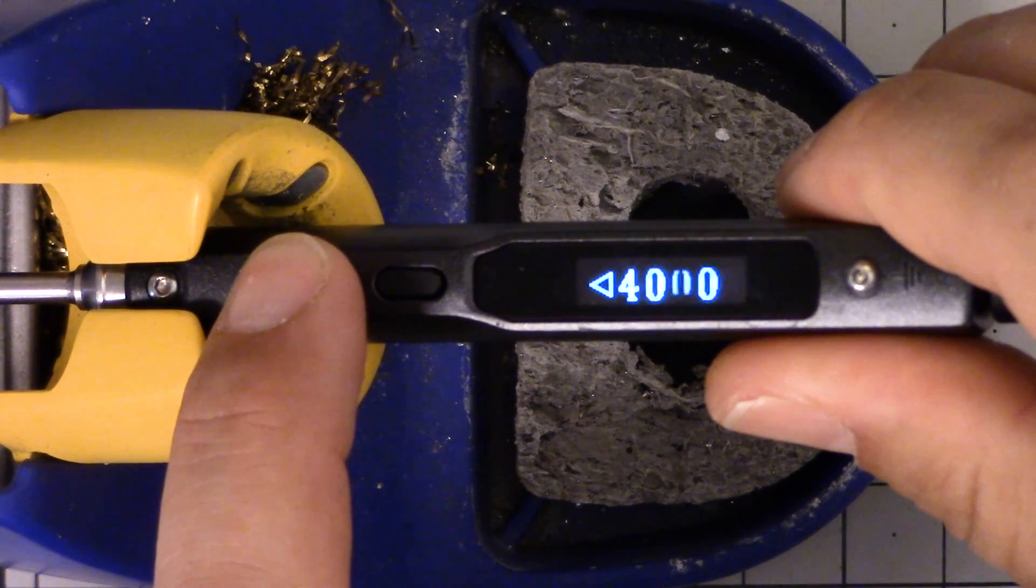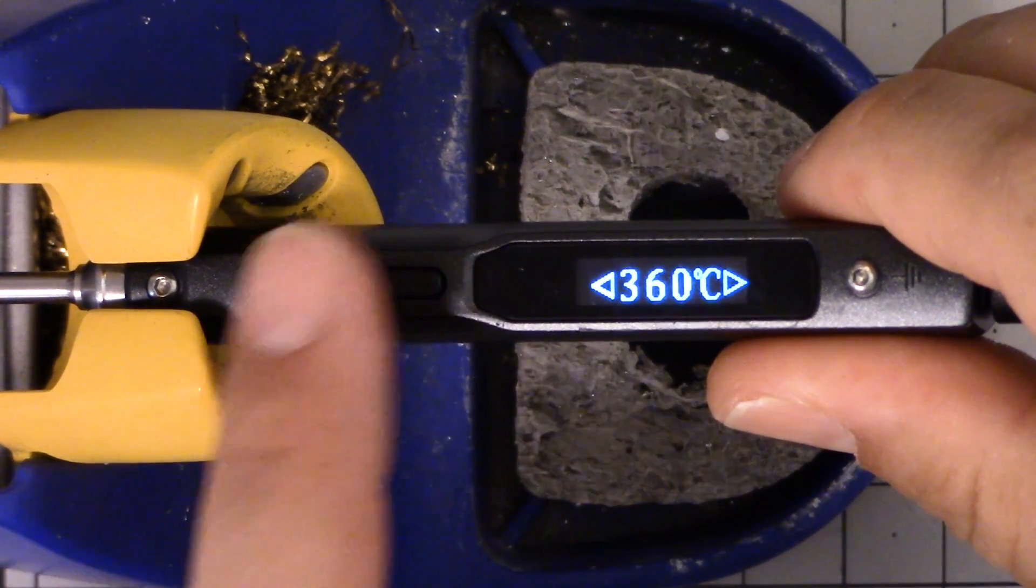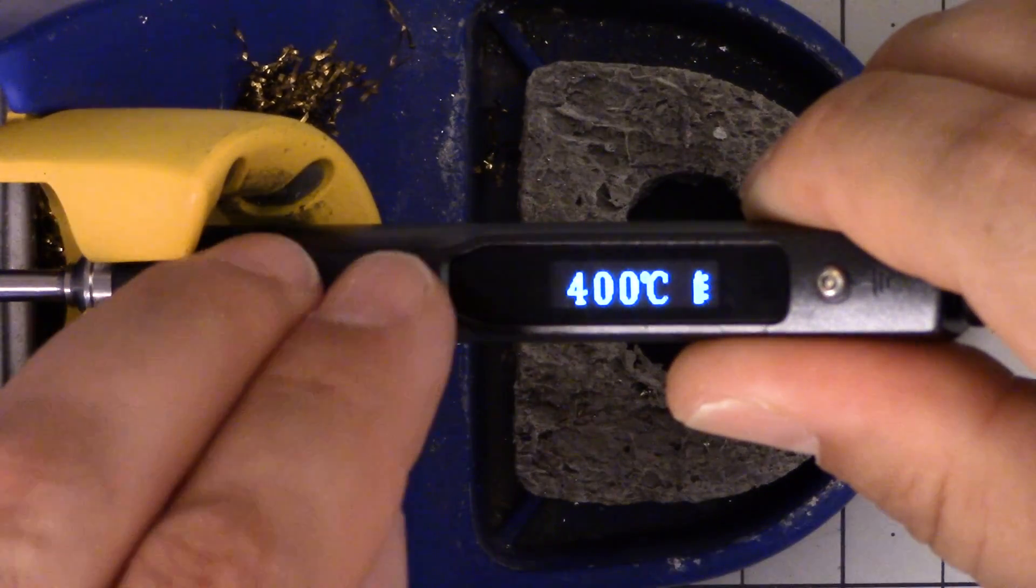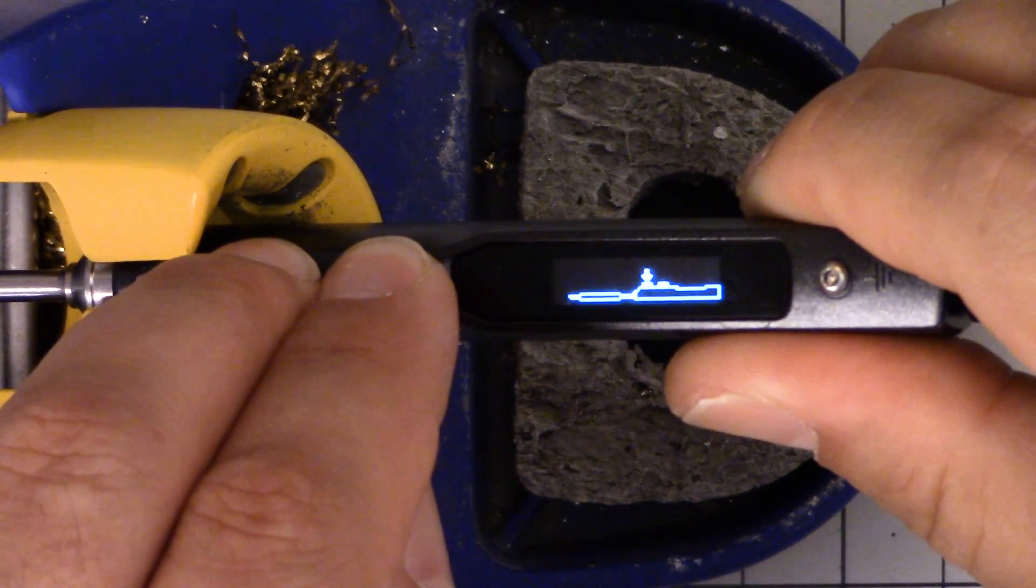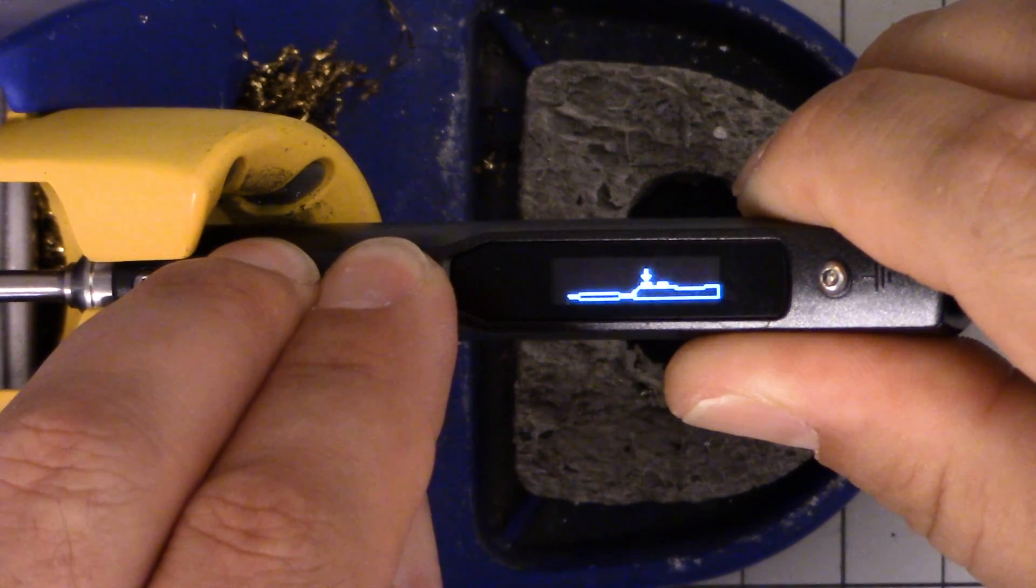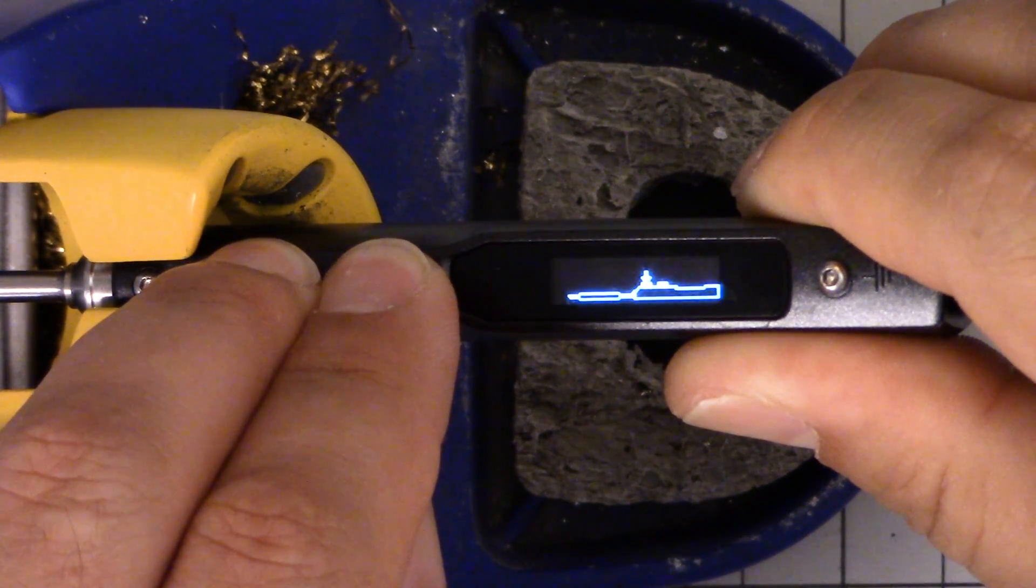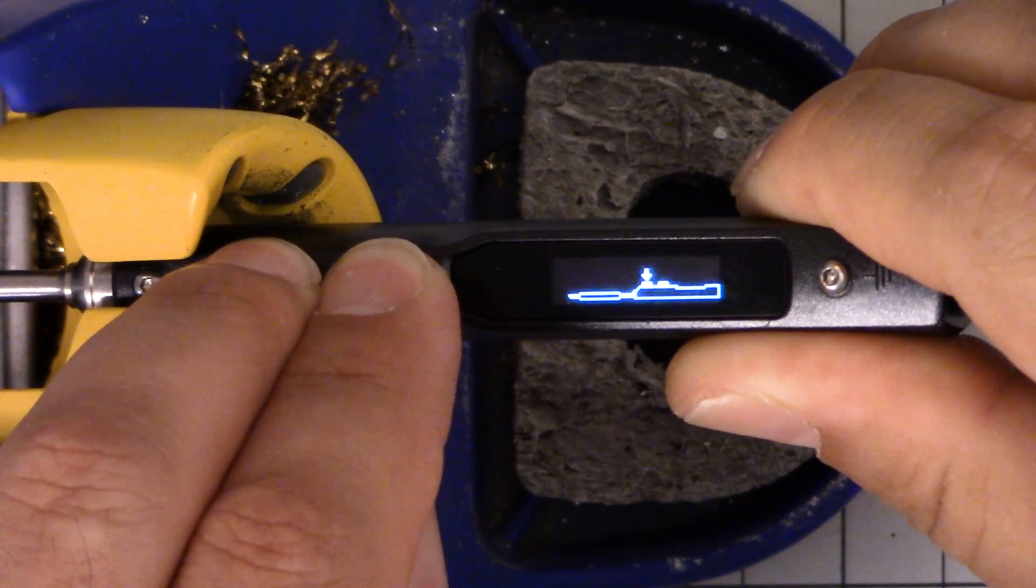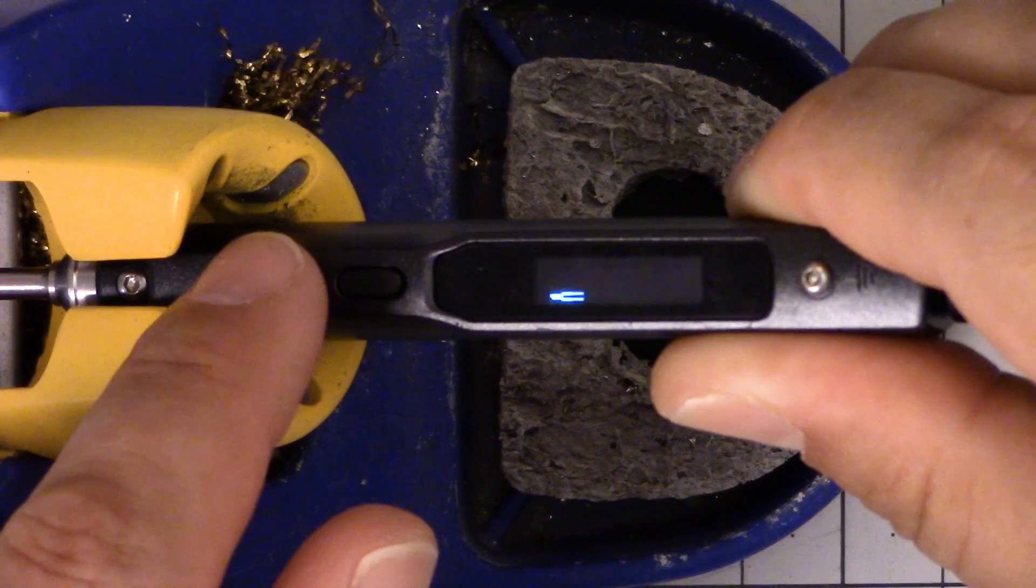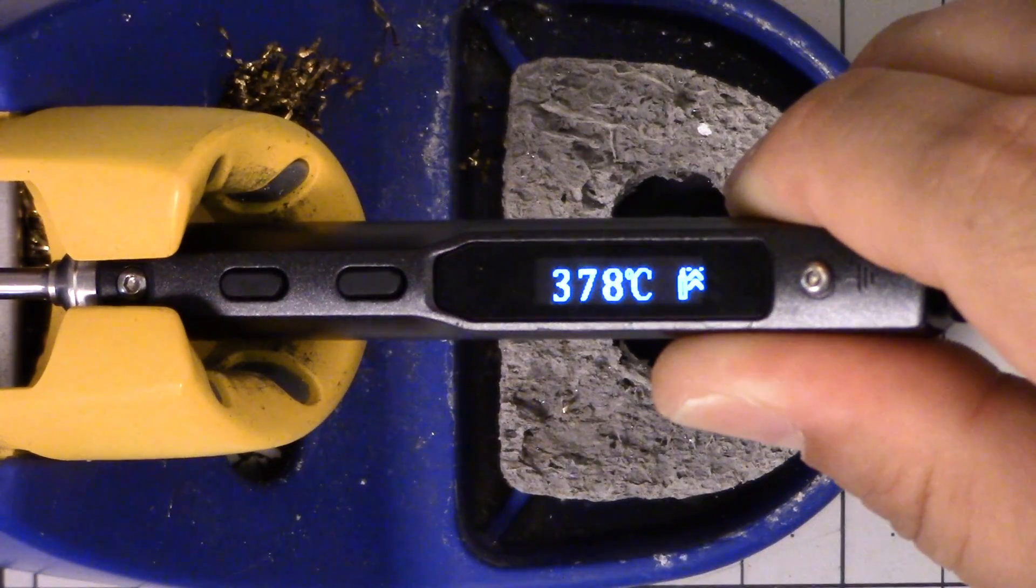You can adjust the temperature by holding these buttons down, so now I'm going down and up. You can put it in standby mode by pressing both buttons for three seconds, and take it out of standby mode by just pressing that button again.